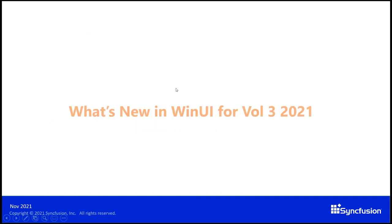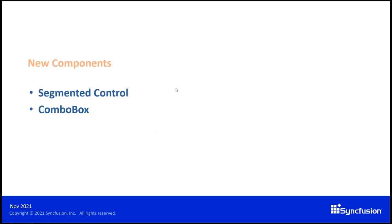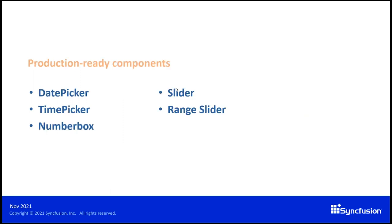First, we can see the new updates in the WinUI platform. For this release, we have included two new components: segmented control and combo box. The date picker, time picker, number box, slider, and range slider components are marked as production ready.